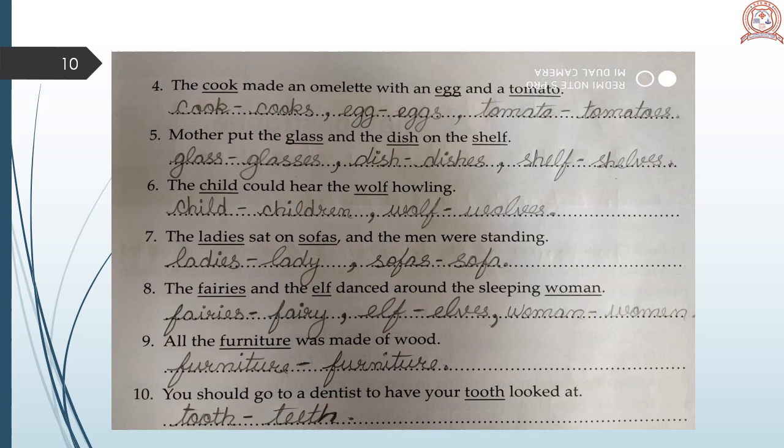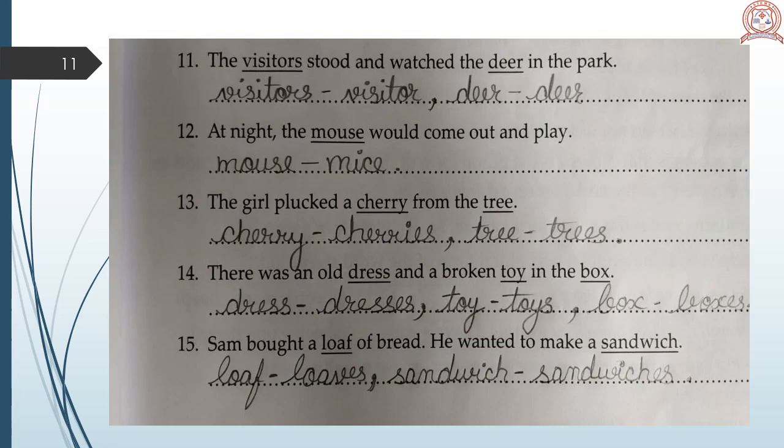The child could hear the wolf howling. Child, children. Wolf, wolves. The ladies sat on sofas and the men were standing. Ladies, lady. Sofas, sofa. The fairies and the elves danced around the sleeping woman. Fairies, fairy. Elves, elf. Woman, women. All the furniture was made of wood. Furniture will remain furniture. You should go to dentist to have your tooth looked at. Tooth, teeth.